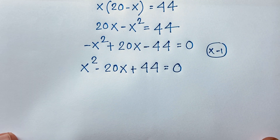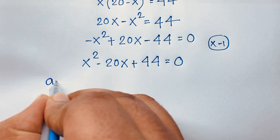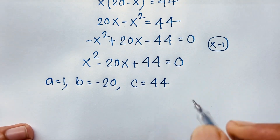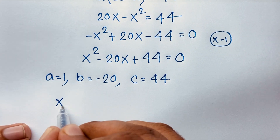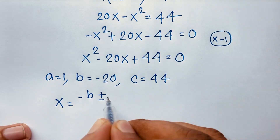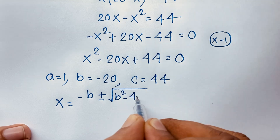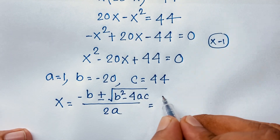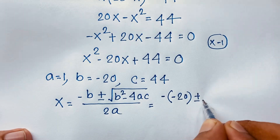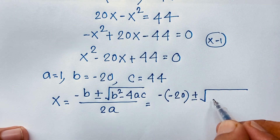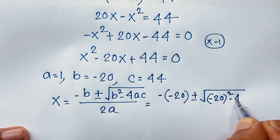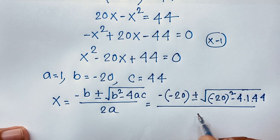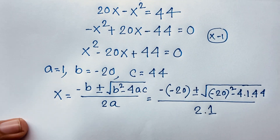Using the quadratic formula, we identify a is equal to 1, b is equal to negative 20, and c is equal to 44. The formula gives x equals negative b plus or minus square root of b squared minus 4ac, all over 2a. Here 2a is 2 times 1, which is 2.